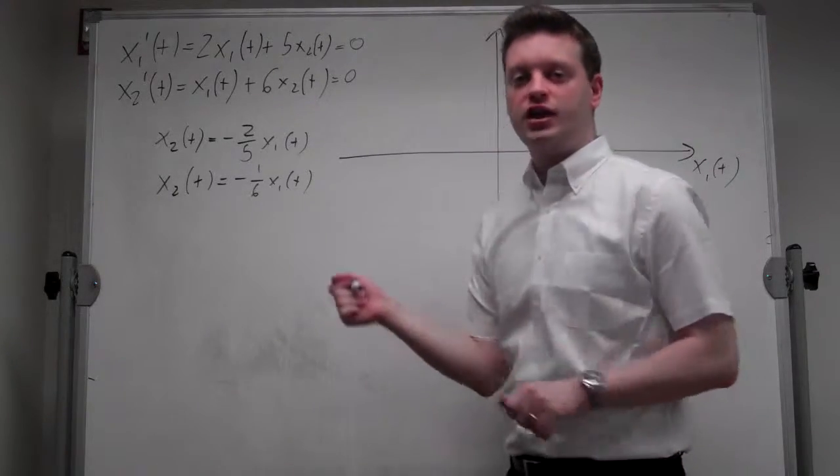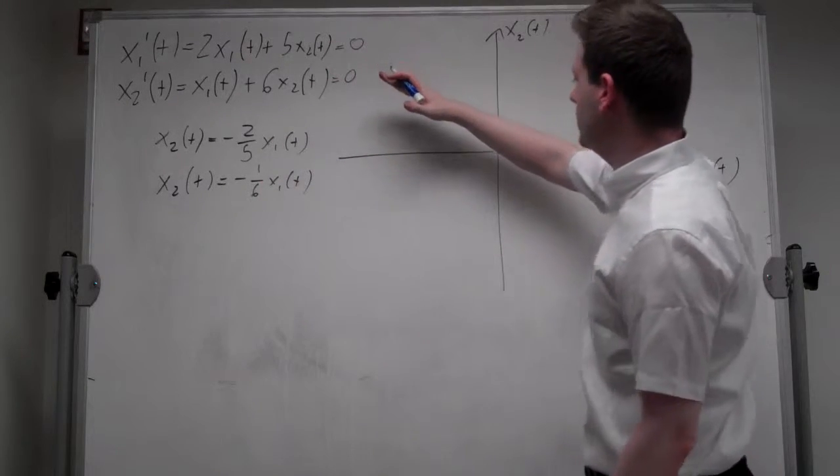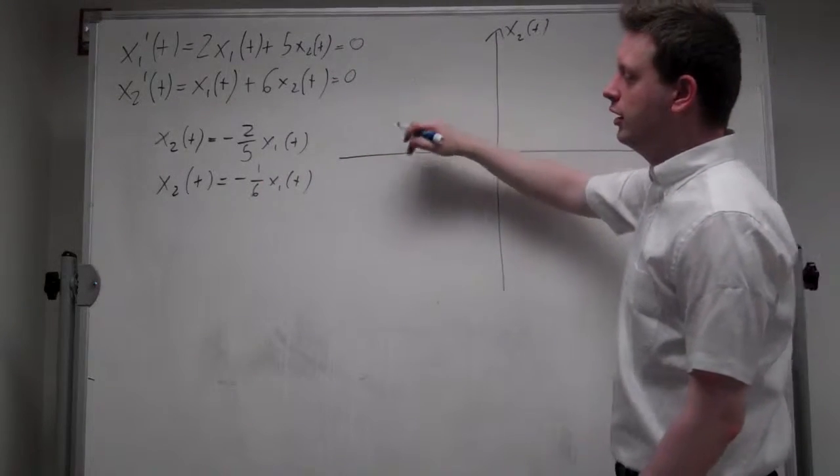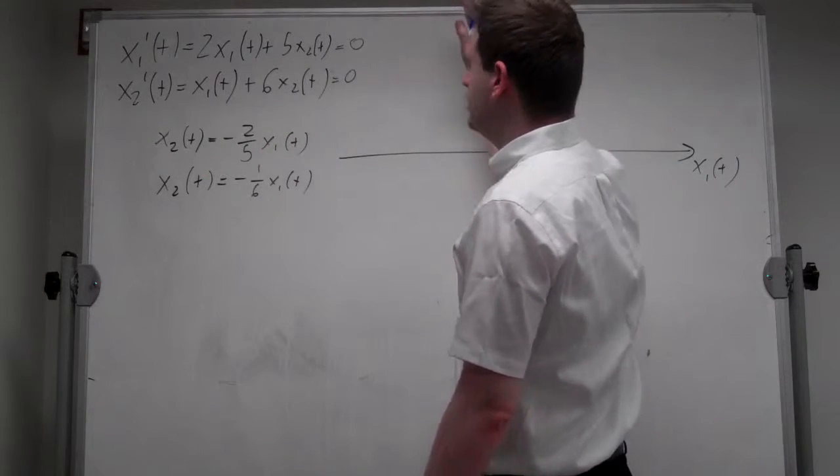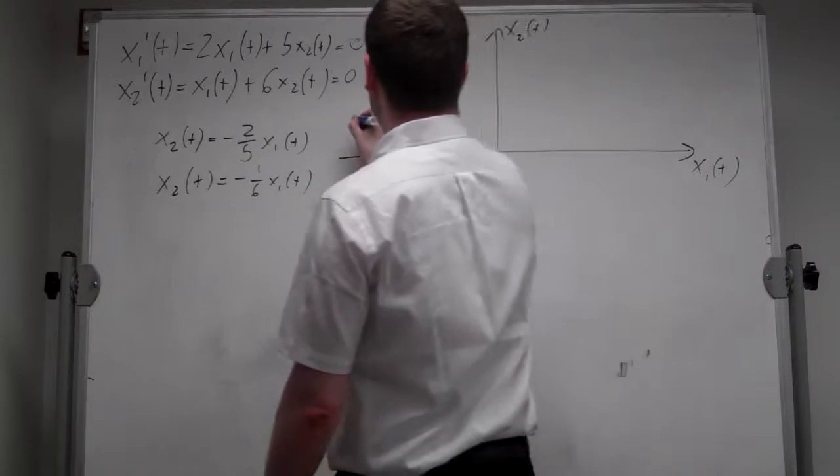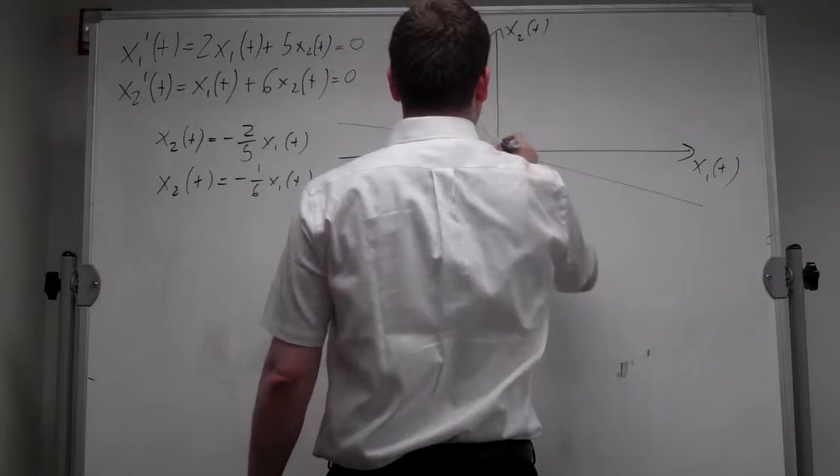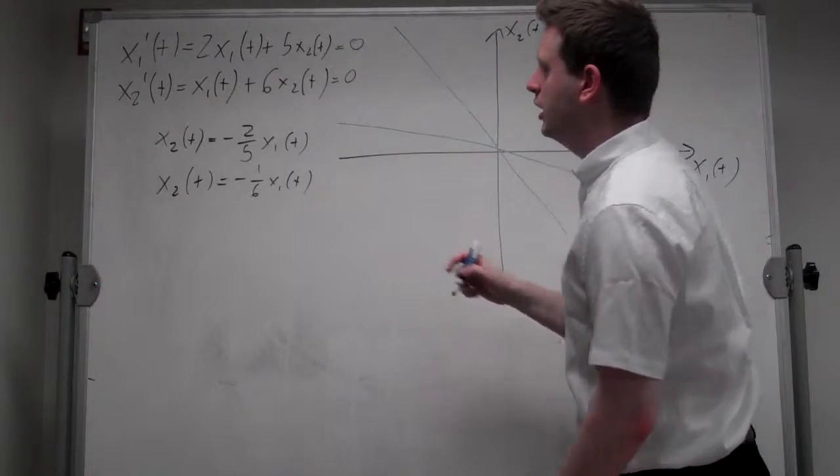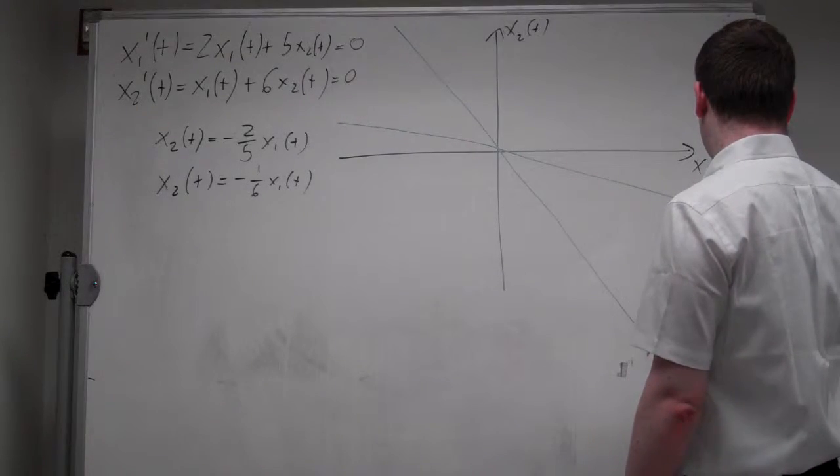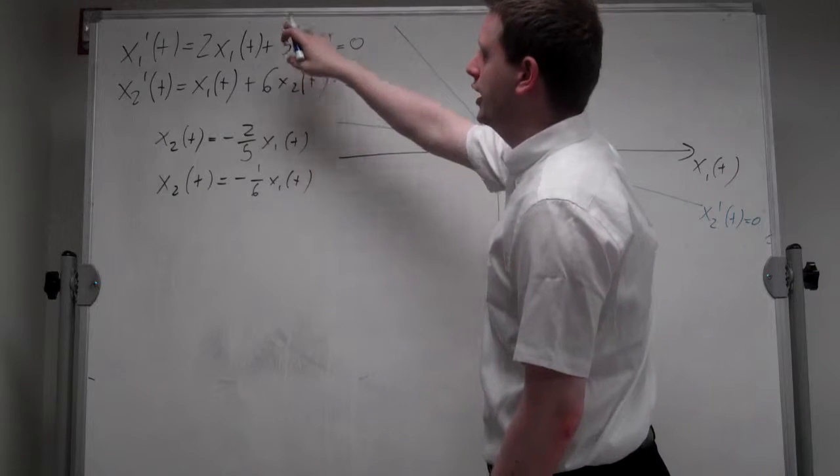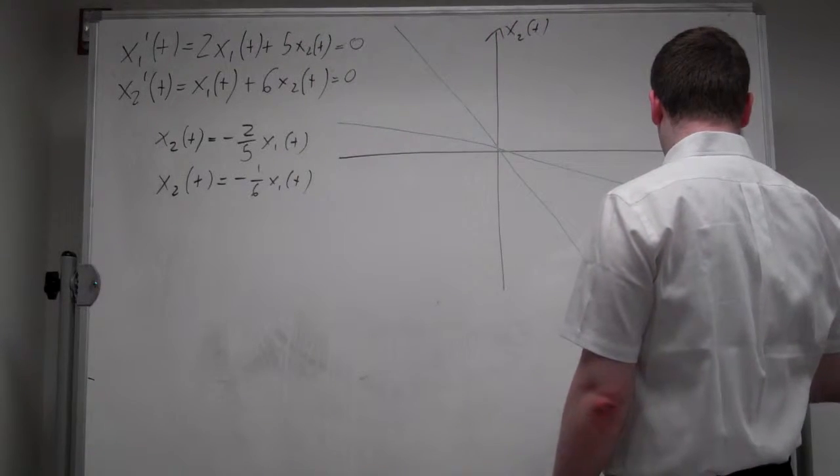It will not be to scale, but I know that minus 1 over 6 is a line which is relatively flat, and 2 over 5 is relatively steep to this one. So we'll draw one relatively flat line and one relatively steep line. The flat one being where x2 prime t equals 0, and the steeper one being where x1 prime t equals 0.